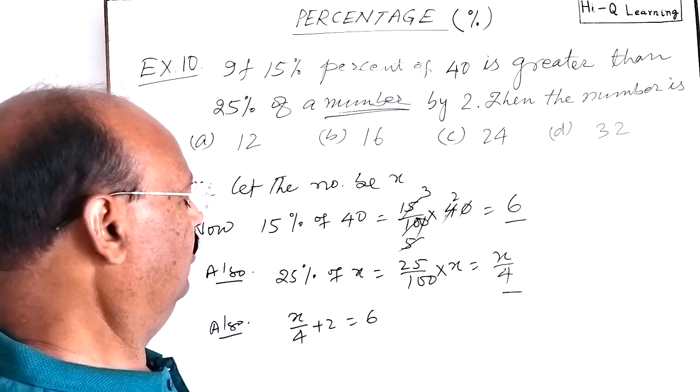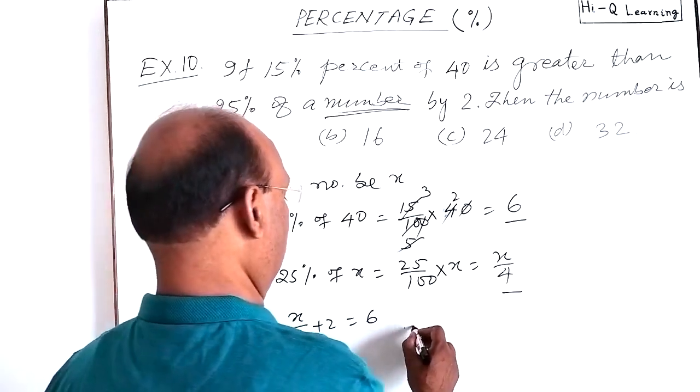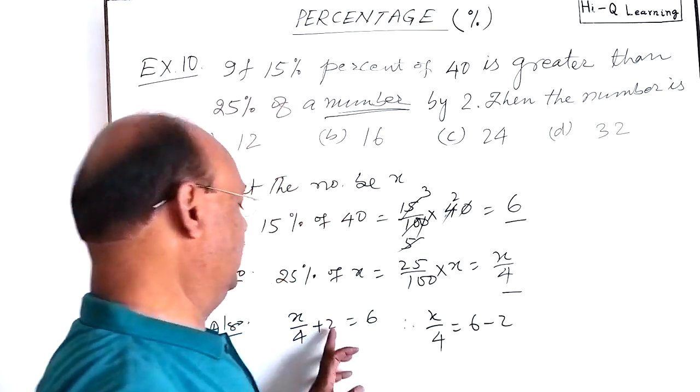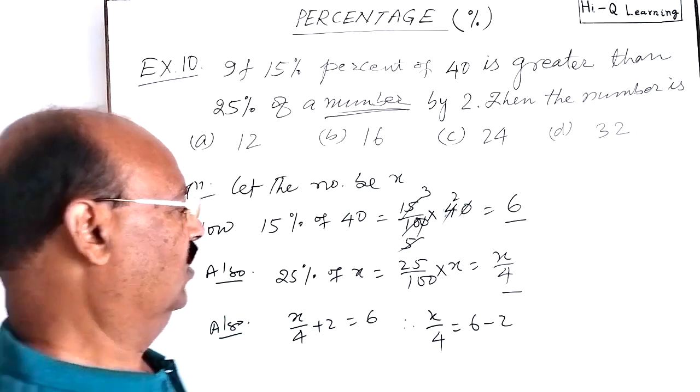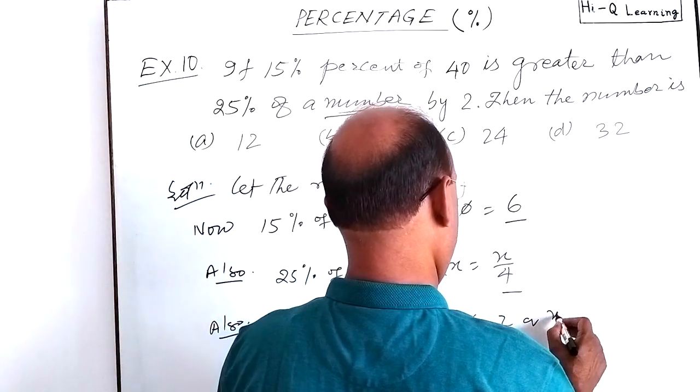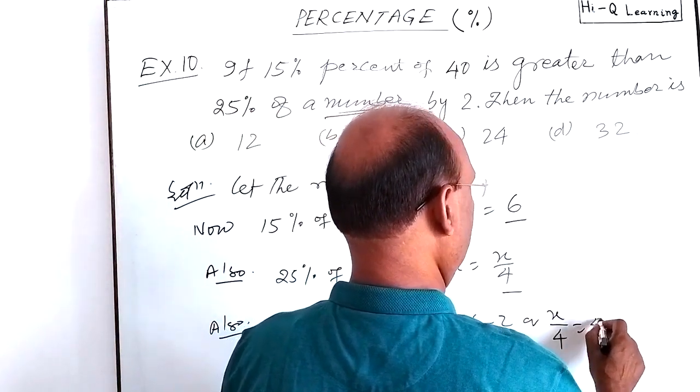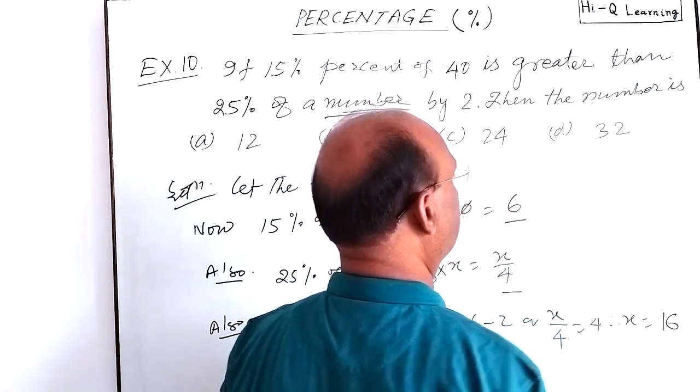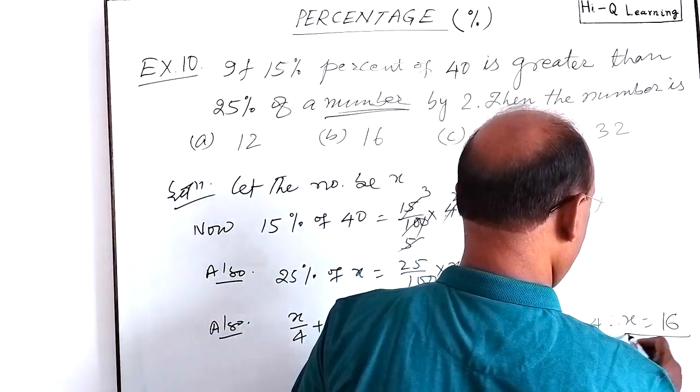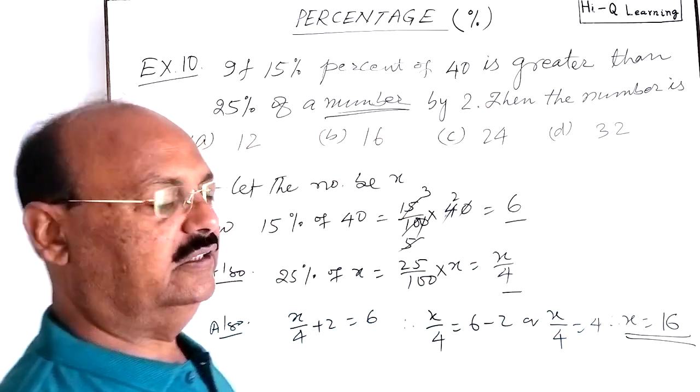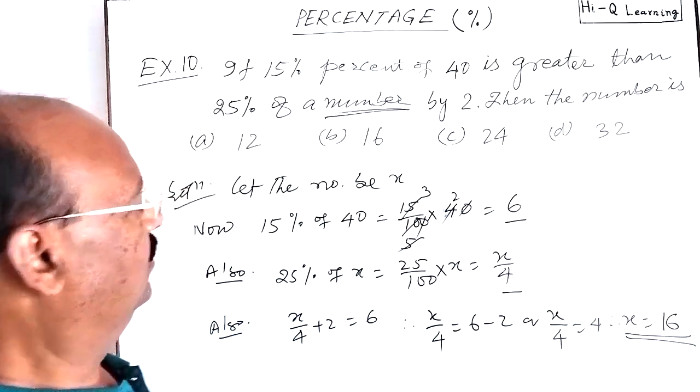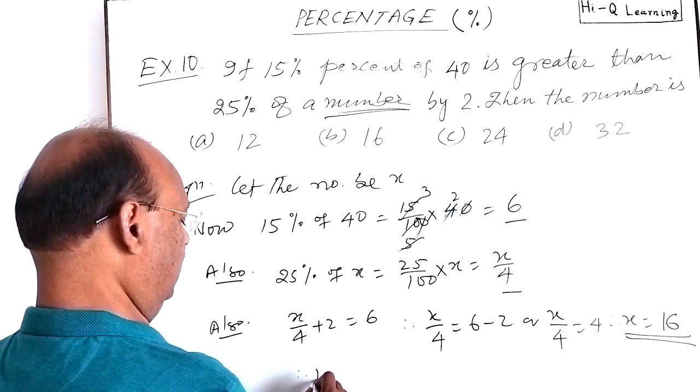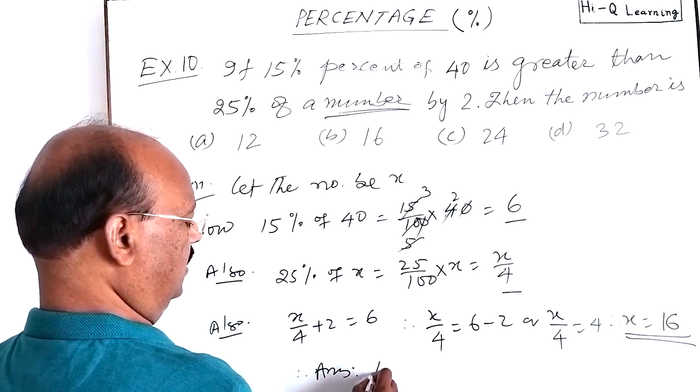Now, let us simplify it. We will get the answer. Therefore, X by 4 is equal to 6 minus 2. Transpose 2 to right-hand side. Or X by 4 is equal to 4. And therefore, X is equal to how much? 4 into 4, that is 16. So this will be the required number. This will be the answer. You see the option. Option B is correct. Therefore, the answer is B.